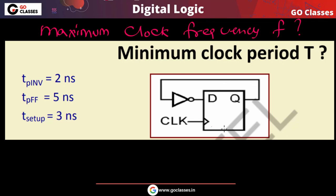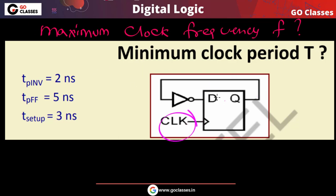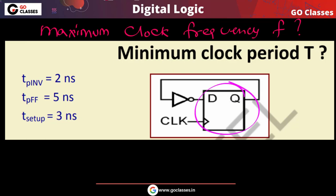In this example we have a D flip-flop and an inverter. This D flip-flop is positive-edge triggered, and the clock drives it. The propagation delay of the inverter is 2 nanoseconds, the propagation delay of the flip-flop is 5 nanoseconds, the setup time of the flip-flop is 3 nanoseconds, and let us assume the hold time is 1 nanosecond.